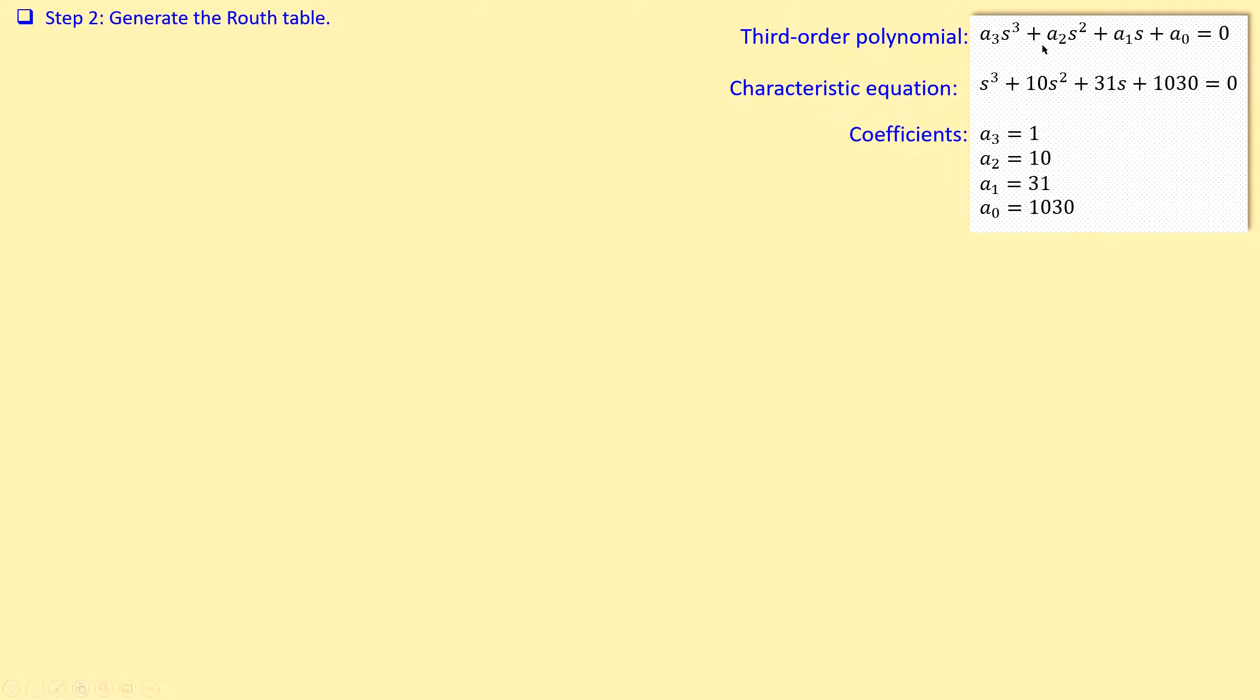We need to compare that to our characteristic equation. If I now compare this, I get a₃ of 1, a₂ of 10, a₁ is 31, and a₀ is 1030. That's actually our four coefficients.